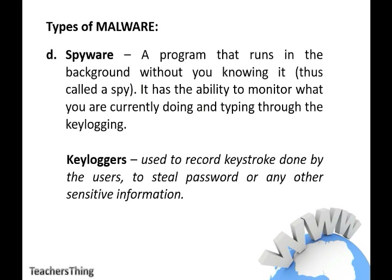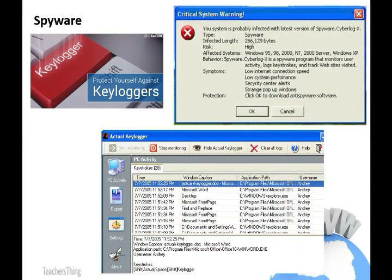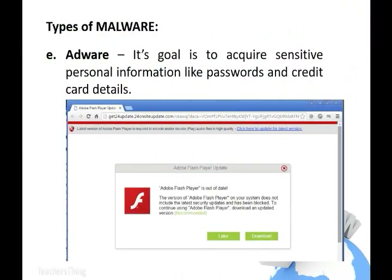Spyware: a program that runs in the background without you knowing it — it's called a spy. It has the ability to monitor what you are currently doing and typing through keylogging. Keyloggers are an example of spyware — used to record keystrokes done by the users to steal passwords or any other sensitive information. Adware: its goal is to acquire sensitive personal information like passwords and credit card details.